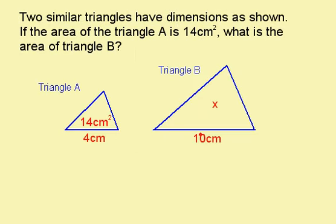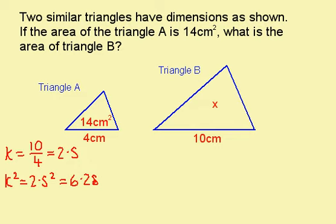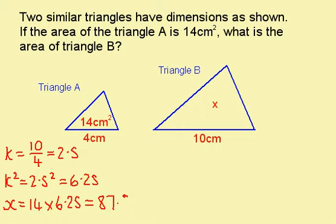These triangles are similar. To find the scale factor, I need to do 10 divided by 4. So my scale factor k is 10 divided by 4, which is 2.5. I can now work out k², which is 2.5 squared, giving me 6.25. So I know that the area of this triangle is 6.25 times the area of this triangle. x is 14 times 6.25, which gives me 87.5 cm² as my answer. If I was going the other way and was given this area and asked to work out this area, instead of multiplying by 6.25, I would divide by 6.25.